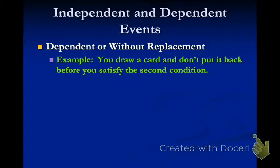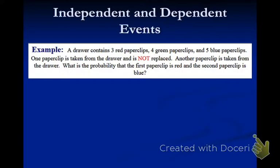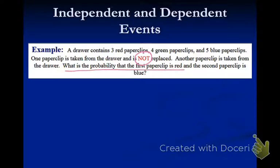Dependent is without replacement. For example, if you draw a card and you don't put it back before you draw the second card — that's going to change the number of things you have. Same scenario: the drawer contains three red paperclips, four green paperclips, and five blue paperclips, but this time one paperclip is taken and not replaced. Another paperclip is taken. What's the probability the first is red and the second is blue? We're asking the same question, but we are not replacing the paperclip.